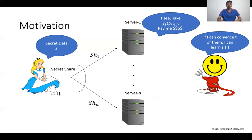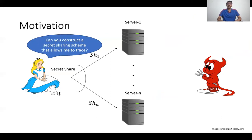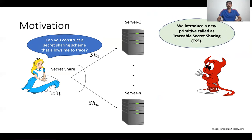So to prevent such a scenario, Alice seeks the help of the cryptographic community. The specific question we are interested in is: can we construct a secret sharing scheme that allows Alice to trace a cheating server? We are interested in not only tracing, but also extracting an evidence against this cheating server, which could be examined in a court of law. And in order to help Alice with this task, we introduce a new primitive called traceable secret sharing scheme, or TSS in short.